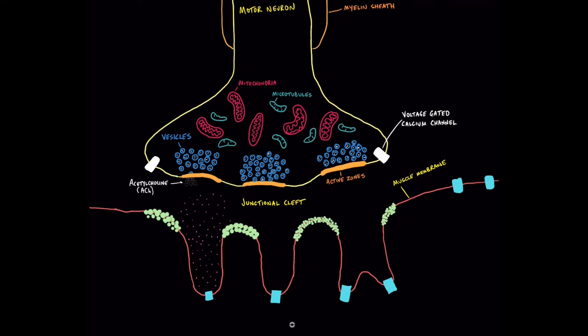Conveniently, and by no accident, placed very close to the active zones are voltage-gated calcium channels. When the nerve impulse travels down the motor neuron, the membrane is depolarizing as the nerve fires. I won't get into how action potentials and nerve depolarization work — there are many videos on the internet for that. But this nerve is depolarizing, with membrane changes traveling all the way down. When depolarization reaches these calcium channels, they respond to changes in membrane voltage — they're voltage-gated calcium channels.